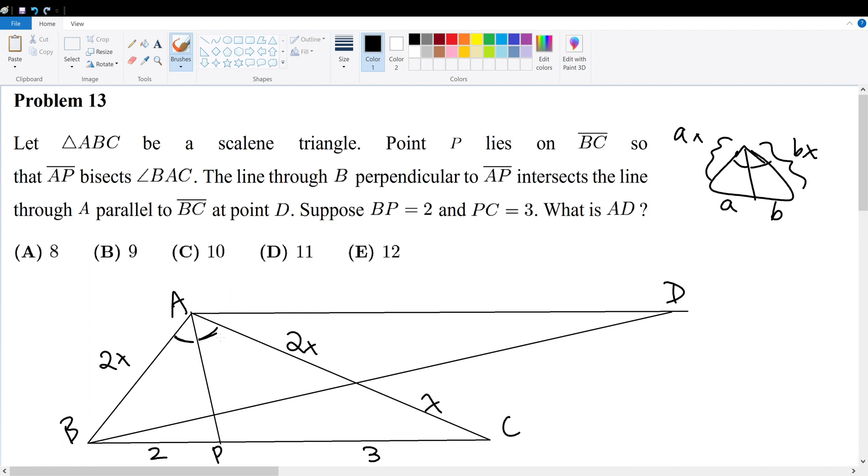Well, first of all, this is a bisecting line, so these two angles are the same. At the same time, AP is a perpendicular line, so we have angle-side-angle. We have ASA congruency, therefore the two triangles are congruent.